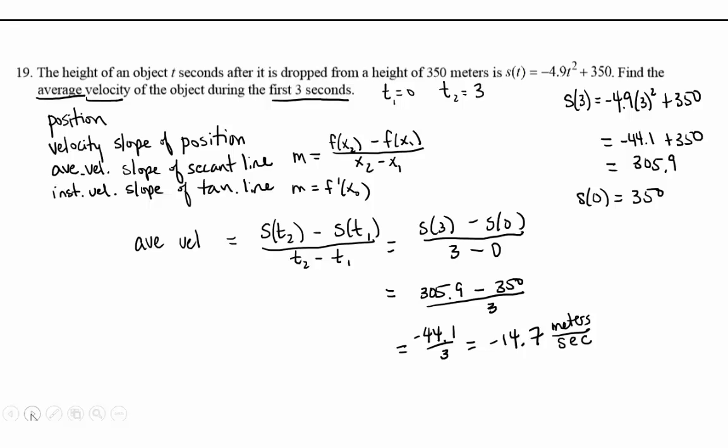Again, units are meters per second. So that was number 19 on the review. What does that negative mean? It's going downward at a rate of 14.7 meters per second, an average velocity,